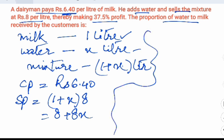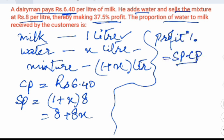So now we can calculate the profit percentage. We can put the formula for profit percentage. The profit percentage is equal to SP minus CP upon CP into 100.